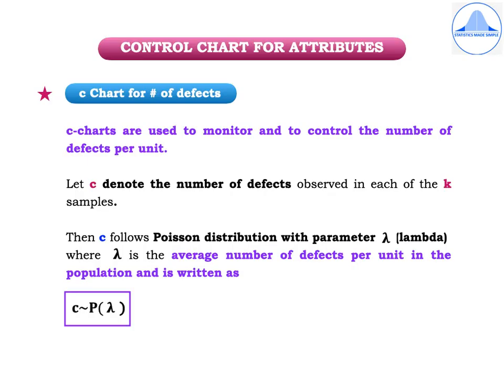The C charts are used to monitor and to control the number of defects per unit. Let C denote the number of defects observed in each of the K samples. Then C follows a Poisson distribution with parameter lambda, where lambda is the average number of defects per unit in the population, written as C follows P(lambda), where P stands for the Poisson distribution.